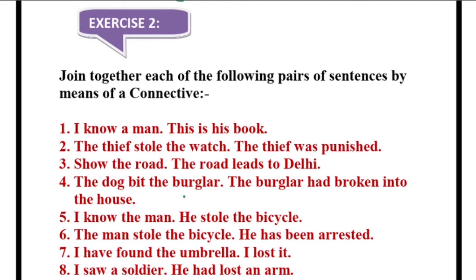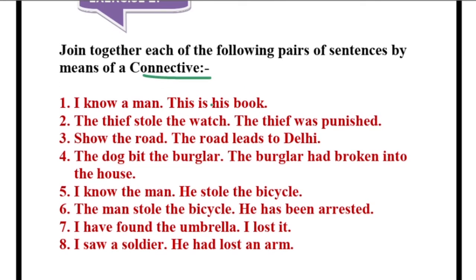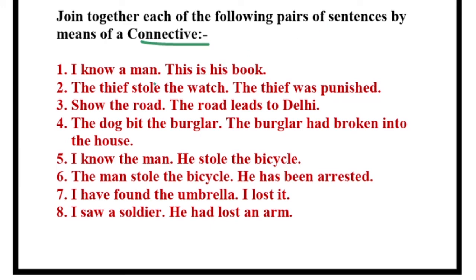You have to join together each of the following pairs of sentences. Number one: 'I know a man / This is his book' — we can write: 'I know a man whose book this is' — living thing, use 'whose.' Number two: 'The thief stole the watch / The thief was punished' — what is repeated? The thief. So: 'The thief, who stole the watch, was punished.' Note the two commas — the thief comma, who stole the watch comma, was punished. Whatever is outside the commas must still form a complete sentence: 'The thief was punished' — correct.